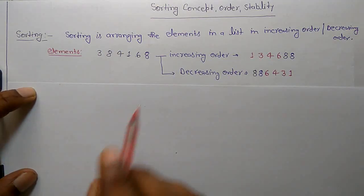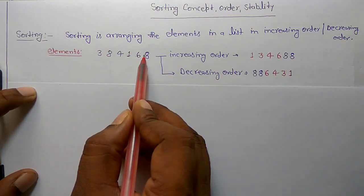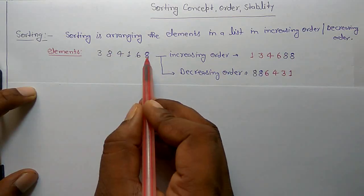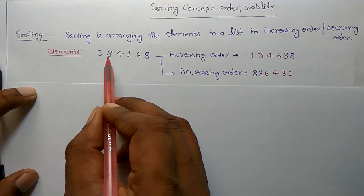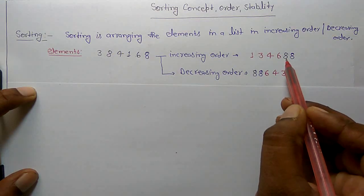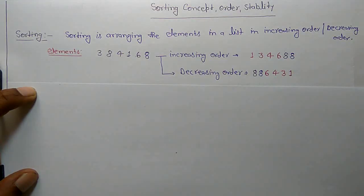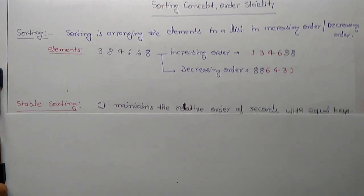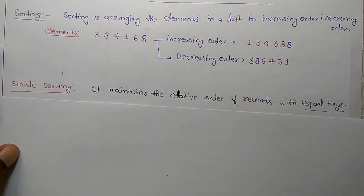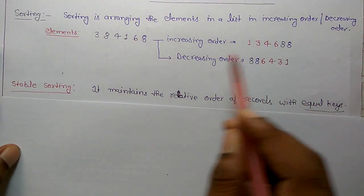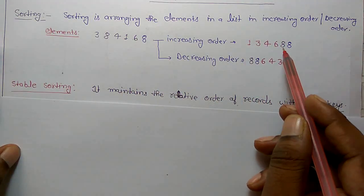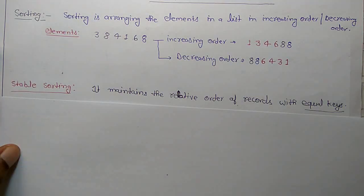Here you can see there are two 8s — this is black 8 and this is blue 8. Whatever order was there originally — first black, then blue — similarly we have maintained that same order in the sorted result. So this type of sorting is known as stable sorting. Stable sorting maintains the relative order of records with equal keys. Since both 8s are equal, we preserve their original order in the sorted output.